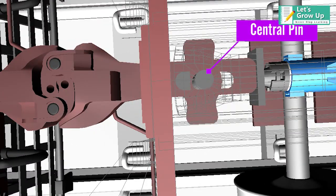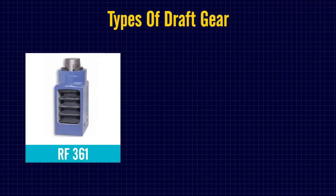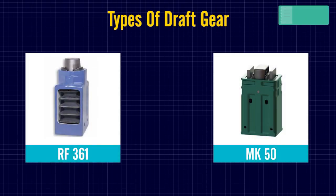Different types of draft gear are used worldwide. There are two types of draft gear used in the Indian railway: RF 361 and MK 50 or Mark 50. These are high-capacity draft gears.